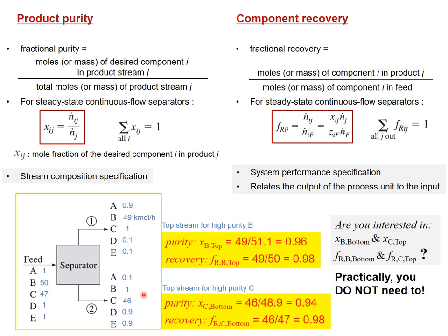Recovery is a system performance specification relating the output of the process unit to the input or feed stream. Practically, you do not need to be interested in the C component in stream 1 or the B component in stream 2. In stream 1, our target should be the B component, and for the bottom stream, our target should be the C component.